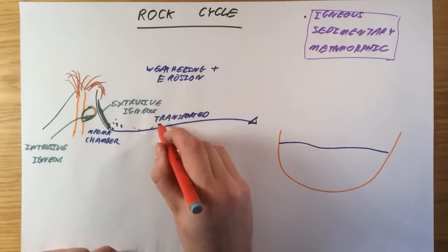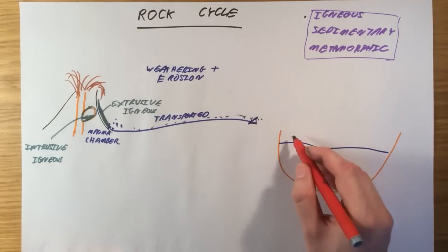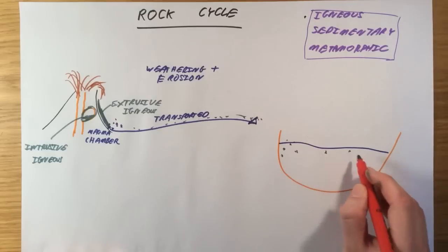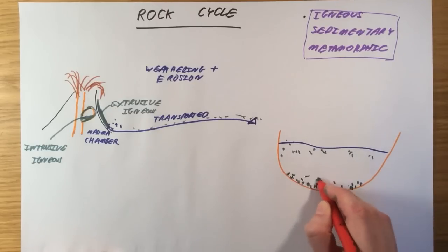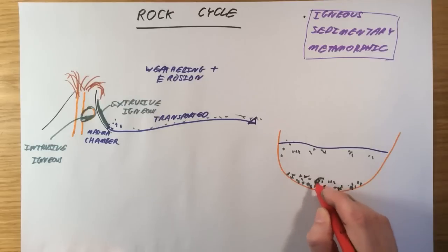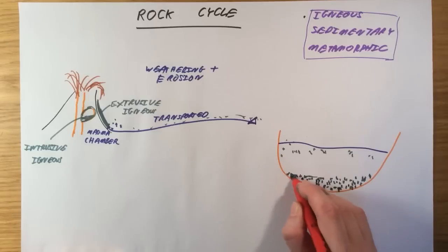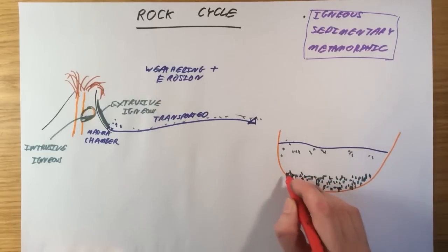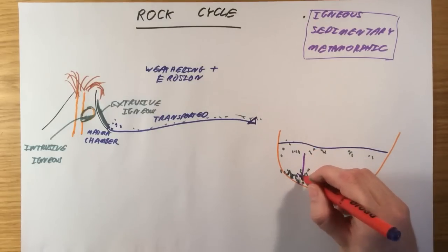And what we get here is our little grains or our sediments will start to be deposited into our sea, and eventually they will start to build up along the bottom. And we call this process sedimentation. So, these little fragments of igneous rock that have been eroded will eventually build up on the bottom of seas.